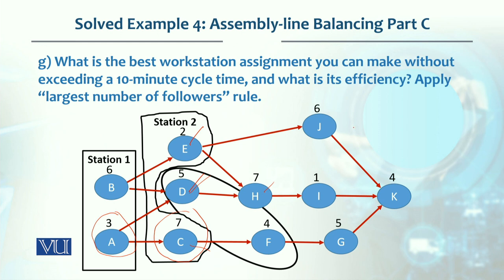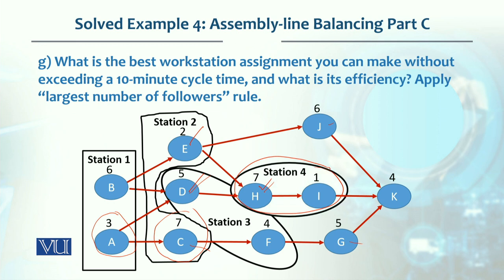For workstation 4, H is 7 minutes, J is 6 minutes, G is 5 minutes. H has the largest number of followers, so H is assigned first. G cannot be added (12 minutes with H), J cannot either (13 minutes). So only I is assigned with H, making workstation 4's total 8 minutes.